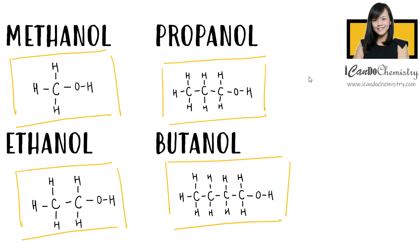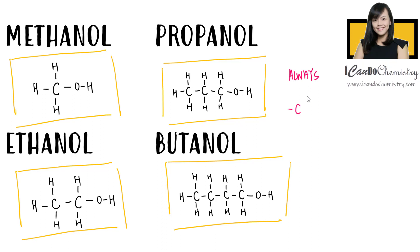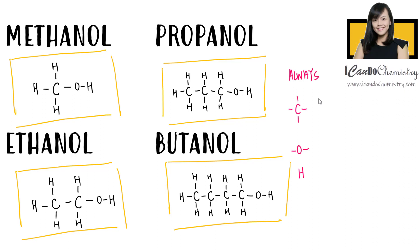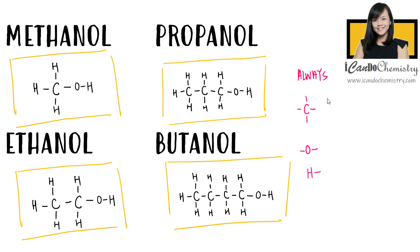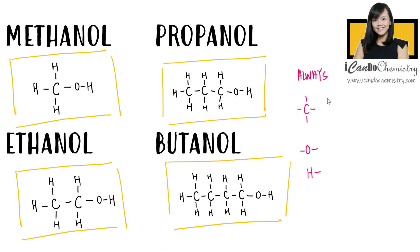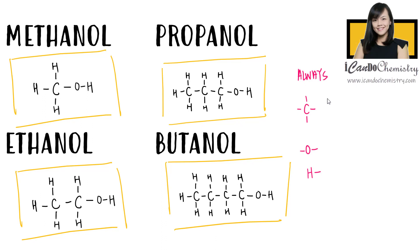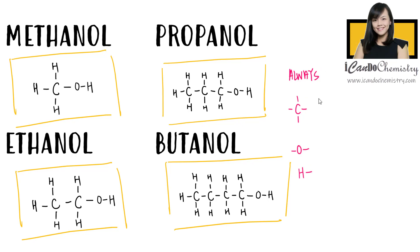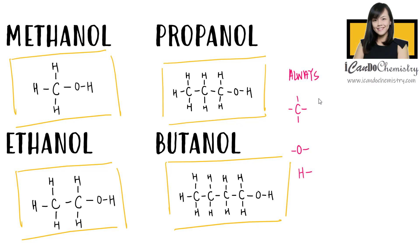If you look at each of these alcohols, you should notice carbon always forms four bonds, oxygen always forms two bonds, while hydrogen always forms one bond. When you are familiar with structure drawing of organic compounds, you should not need to depend on the dot and cross diagram to achieve the full structural formula of organic compounds, which saves time. Practice more and you'll be more confident in writing full structural formulas of organic compounds.